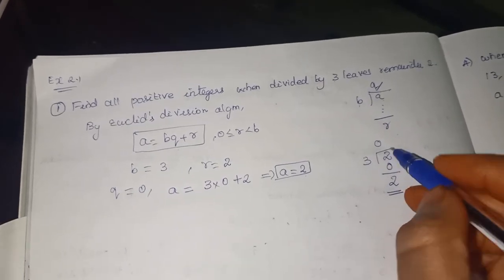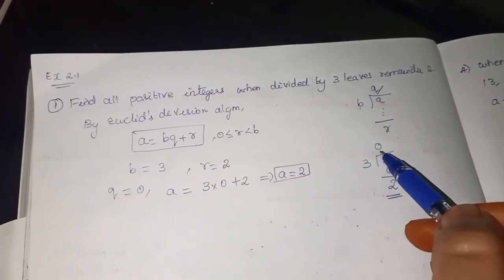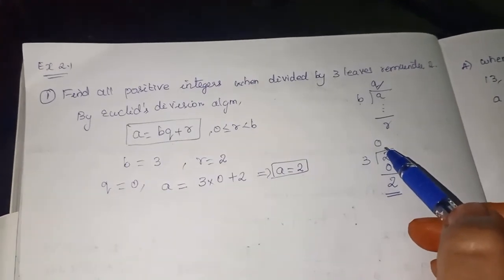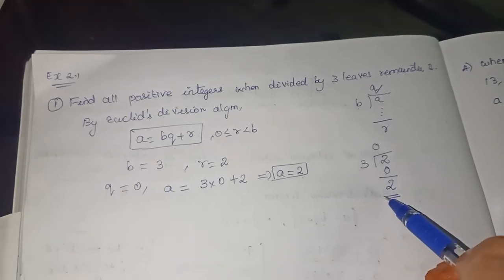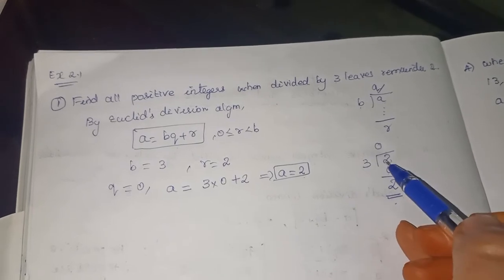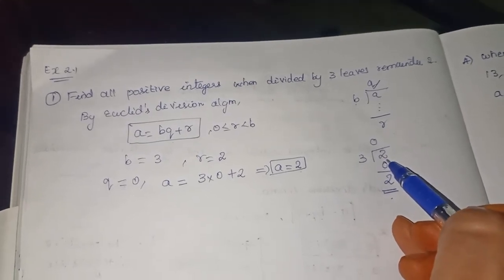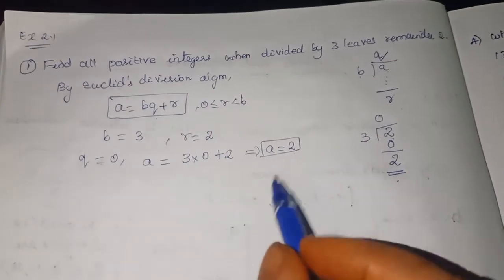We have to say only the positive integers. So we don't have negative value. Decimal also we don't want. So only positive integers. 0, 3 is 0, the remainder is 2. So we are getting the remainder 2. The positive integer, first positive integer is 2. So we are substituting Q is equal to 0, we are getting the first positive integer.